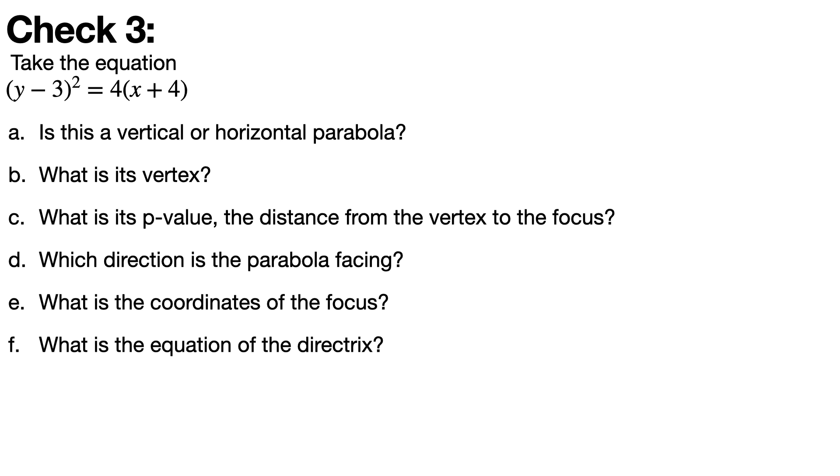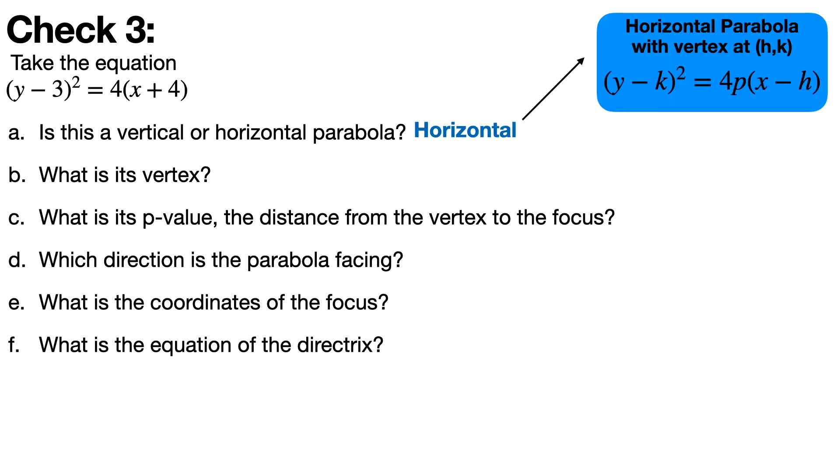Okay, so we're up to the check for this problem. We're going to go through these one by one with short explanations. Is this vertical or horizontal? It's horizontal because it looks like the equation for a horizontal parabola. The quick way to make a note of that is that if the squared thing is y, then it's horizontal. And if the squared thing is x, then it's vertical.